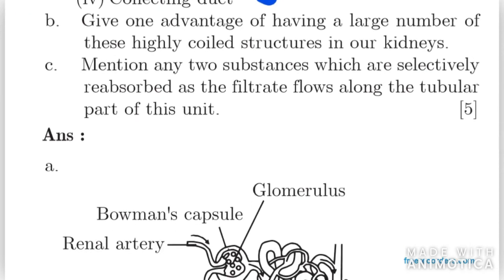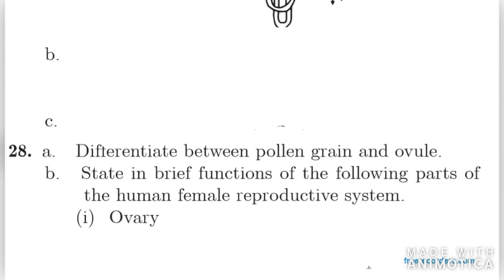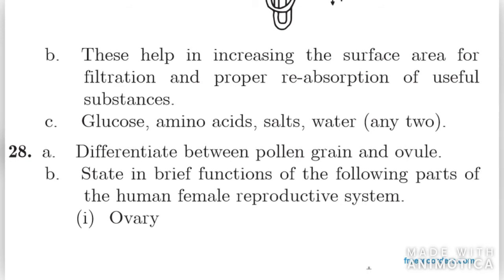Moving on to question number 28: differentiate between pollen grain and ovule. The pollen grain is a male reproductive part whereas the ovule is a female reproductive structure. Pollen grain is a structure contained in the pollen sac; ovule is the structure contained in the ovary. Inside the pollen grain the male gamete is present, while inside the ovule the embryo sac containing the female gamete is present.